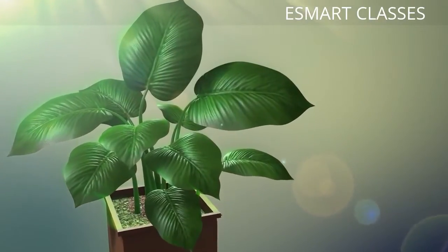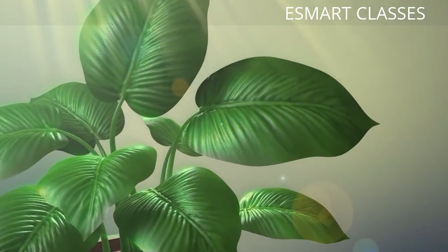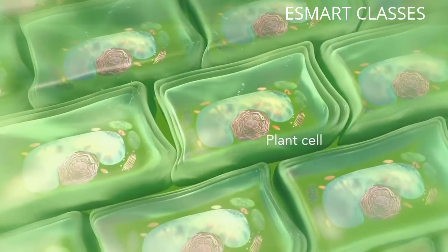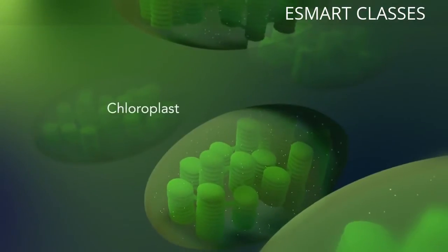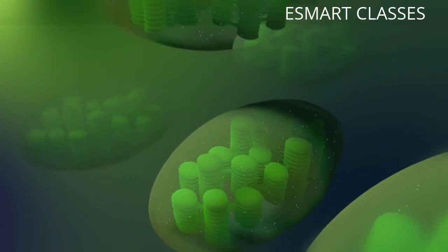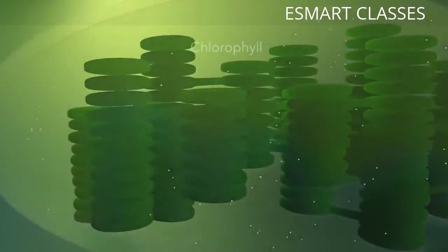Some organisms, such as plants that are photo-autotrophic, meaning they capture sunlight for energy, have cells with an organelle called a chloroplast. The chloroplast is where photosynthesis happens. It's green because it has a green pigment called chlorophyll.